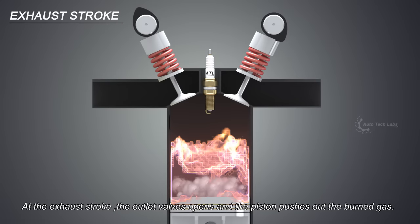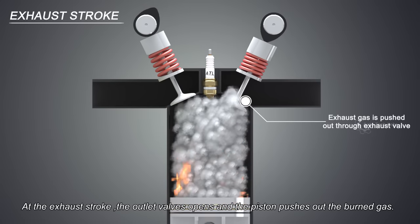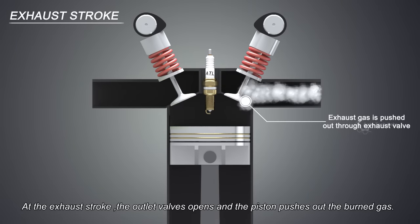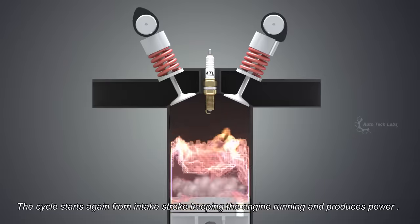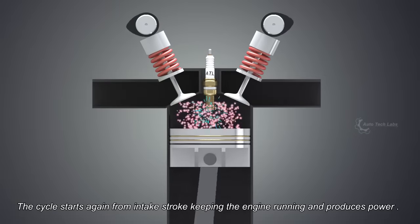At the exhaust stroke, the outlet valves open and the piston pushes out the burned gas. The cycle starts again from intake stroke, keeping the engine running and producing power.